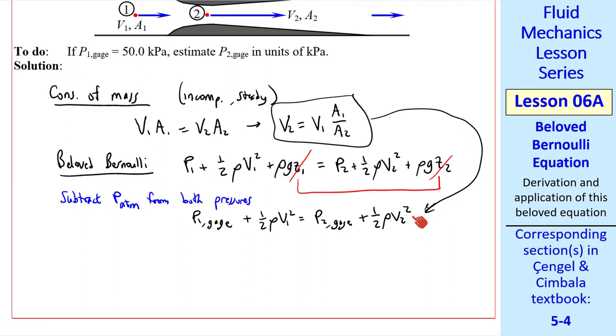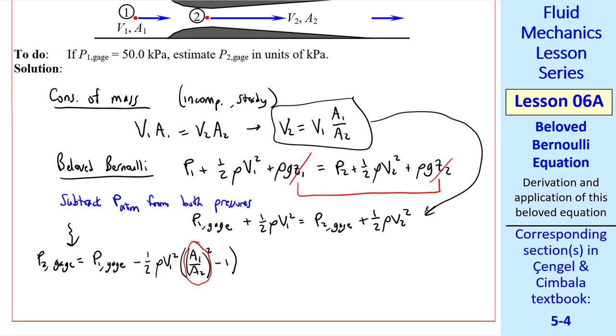But plug in this equation from conservation of mass. A little bit of algebra yields P2 gauge equal P1 gauge minus ½ρV1² times A1 over A2 squared minus 1. We were given in the problem statement that A1 over A2 is 4.